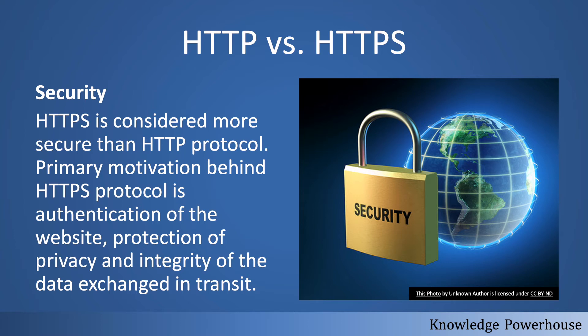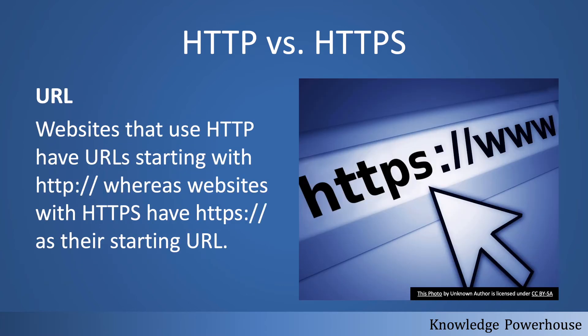One visible difference is in the URLs: HTTP uses 'http://' while HTTPS uses 'https://'. In web browsers, users also see a lock icon or some indicator that the site is secure. In many browsers, if a site does not have a valid certificate, the browser will warn users that it might be a malicious website, making the URL scheme an important signal.